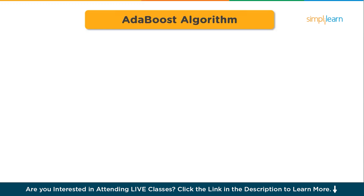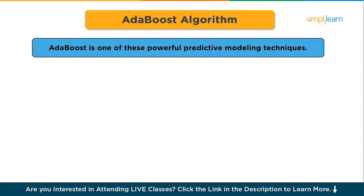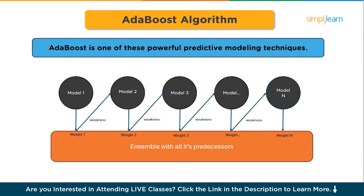Now let's look at the AdaBoost algorithm. AdaBoost is one of these powerful predictive modeling techniques known as adaptive boosting. It is an ensemble method in machine learning that commonly uses a decision tree with just one split — often called decision stumps — as its base estimator. The model initially assigns equal weights to all data points, then increases the weight of incorrectly classified points. In subsequent models, these higher-weight points are given more attention, and the process continues training new models until the overall error is minimized.